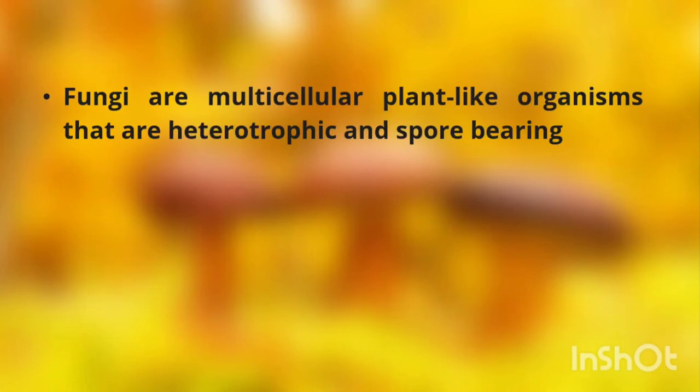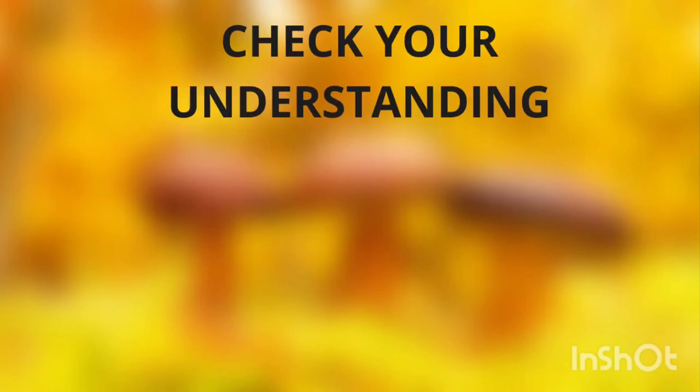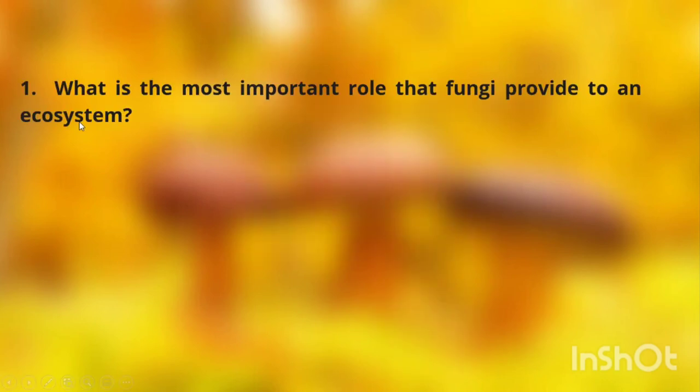Let us summarize what we have learned. Fungi are multicellular plant-like organisms that are heterotrophic and spore-bearing. They differ from plants because they lack chlorophyll and have a chitinous cell wall. Now, let us check your understanding. Number one: what is the most important role that fungi provide to an ecosystem?